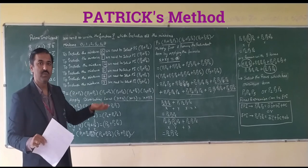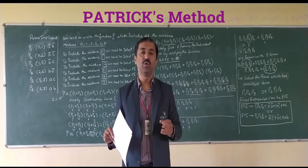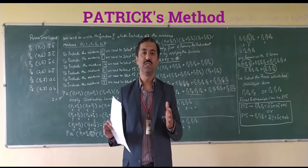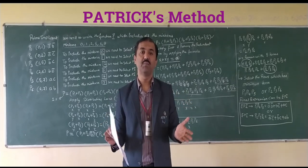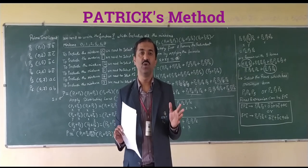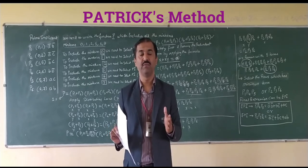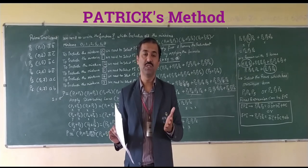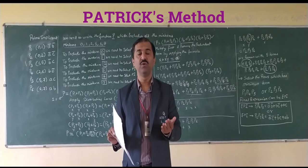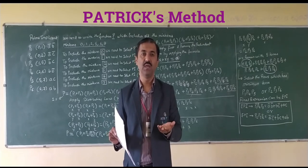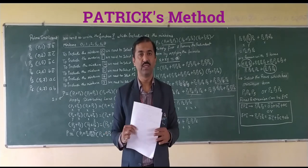So this is how we apply the Petrick method to find the essential prime implicants. Remember: 50% of the problem — formation of the tabular method and determining the prime implicants — remains the same as the Quine-McCluskey method. After that, we apply the Petrick method to find the essential prime implicants when it is not possible through the QM method alone. In the next video, we will solve one more problem on Petrick's method. Thank you, students.